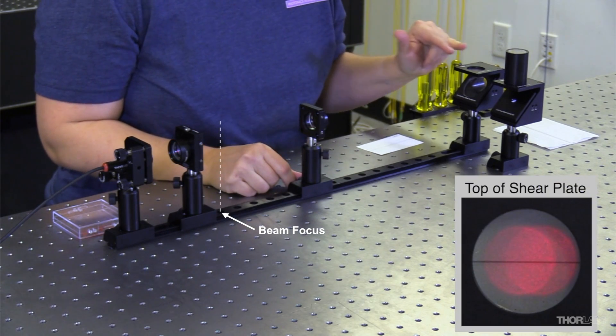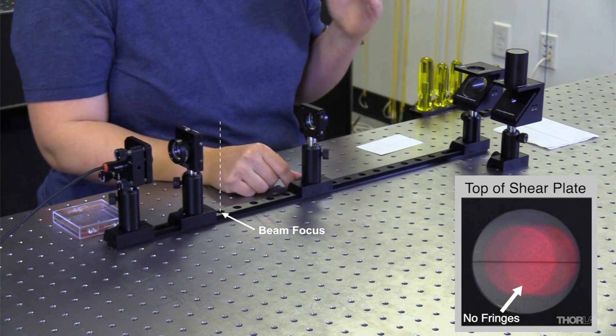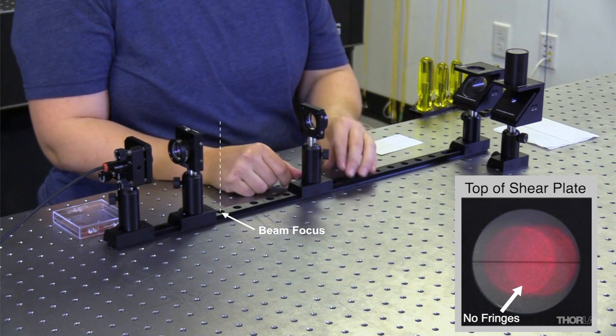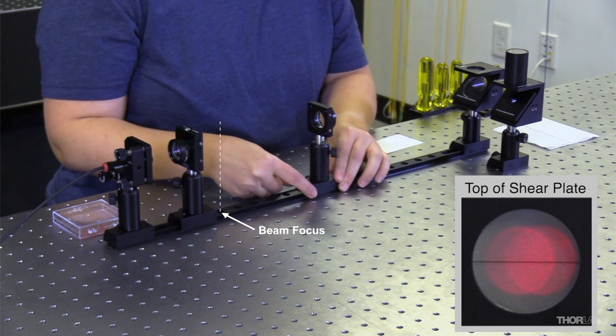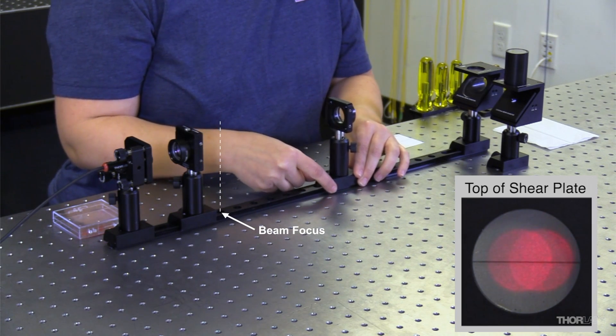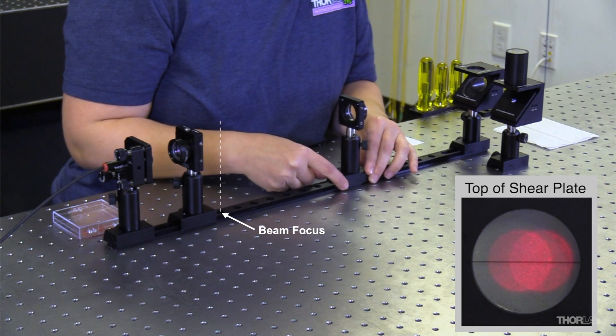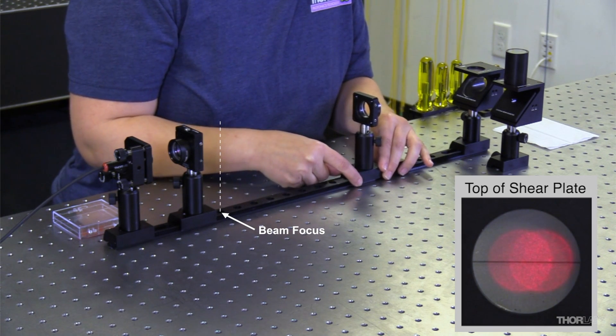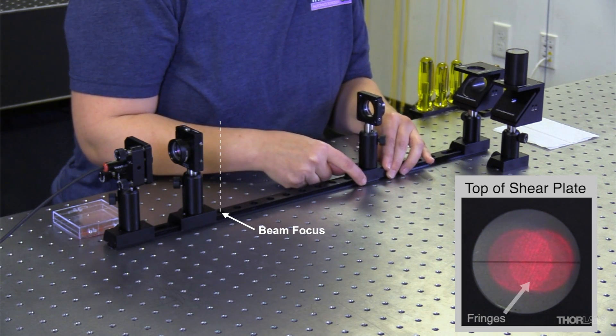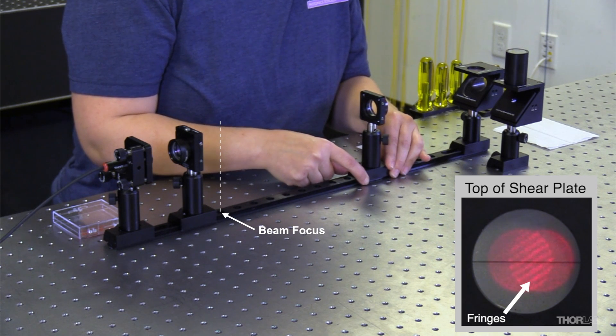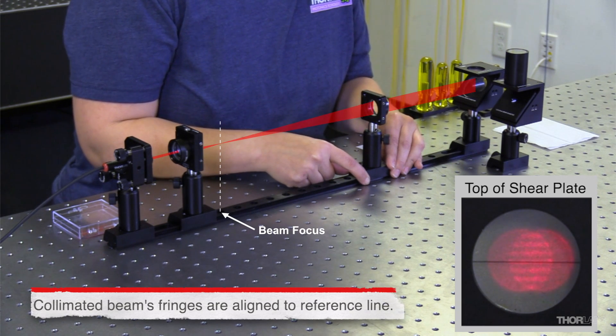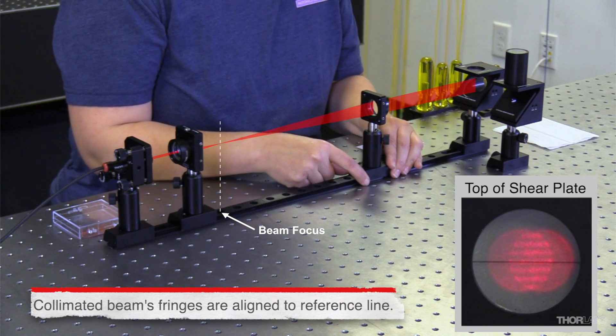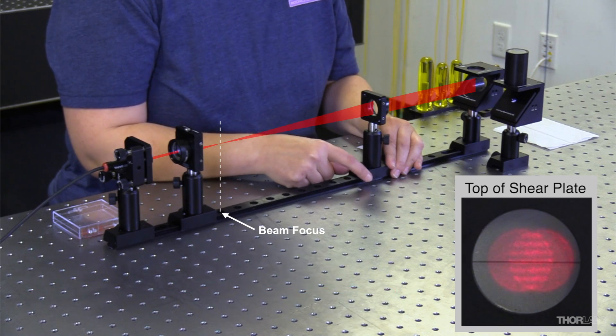But they're just fuzzy now. I'm not seeing any of the interference fringes we talked about. So I'm going to move this farther away. And as I get farther and farther away from the focus, I start to see some fringes appear. And as I keep getting closer to the point of best collimation, those fringes rotate until they are aligned parallel to the black line on top of the shearing interferometer.